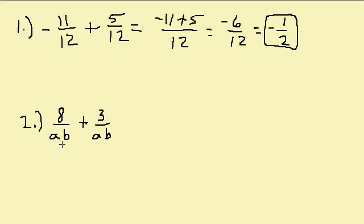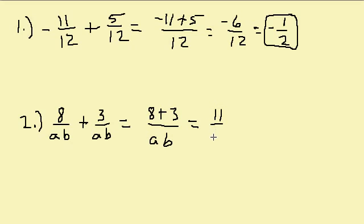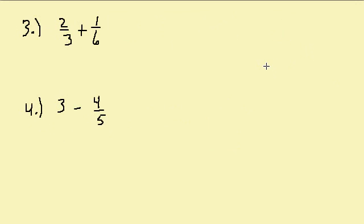Let's look at another one. We have a common denominator already — ab — so we can combine the numerators: 8 plus 3, all over the common denominator ab. So 8 plus 3 is 11 over ab. There's our answer.